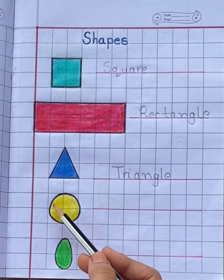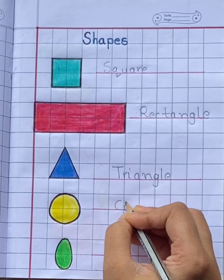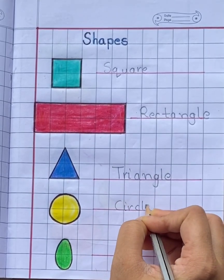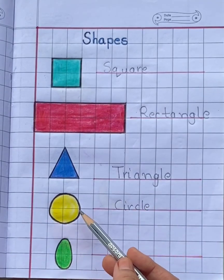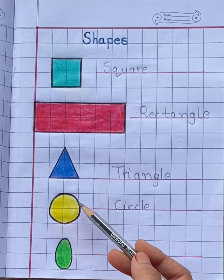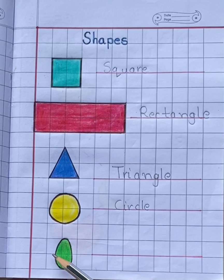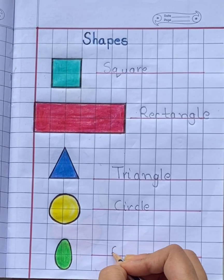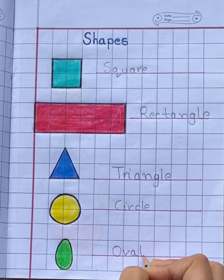Next shape is circle. C-I-R-C-L-E. Children, does a circle have a side? No, a circle does not have a side. Oval. This shape is called oval. O-V-A-L.